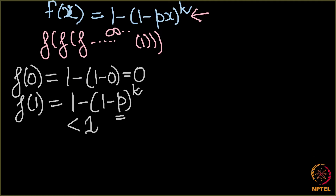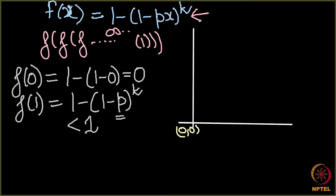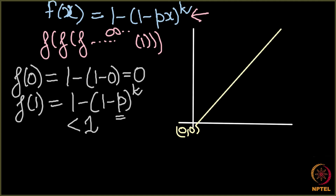Let us draw a plot to see how this function looks. I draw the y-axis and x-axis, with origin at (0,0). I also draw a reference line here. This line is y = x, and the point (1,1) lies on it. Now let us see how our function f looks on this plot.